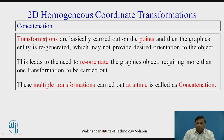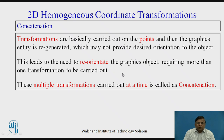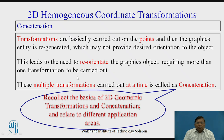Concatenation is the need we have in geometric transformations, wherein with any given single transformation, many times we may not get the desired orientation of the object. Hence we need multiple transformations to reorient the given graphics object. Carrying out such multiple transformations at a time is referred to as concatenation — this is nothing but more than one transformation carried out so as to have the orientation of the object the way the designer wants.